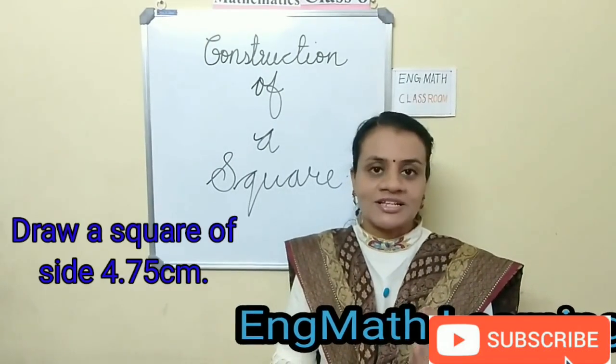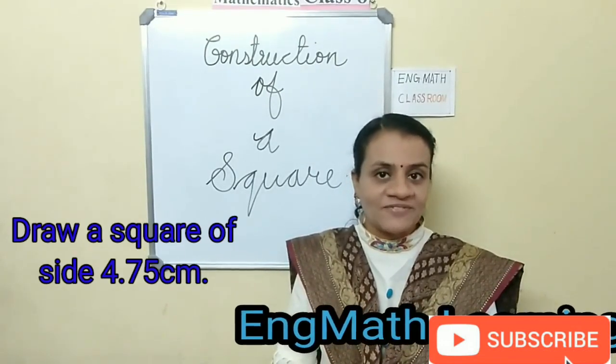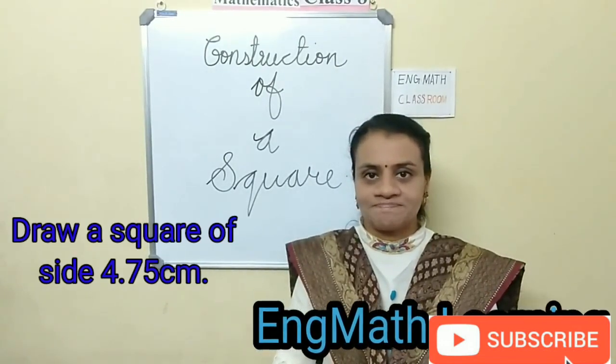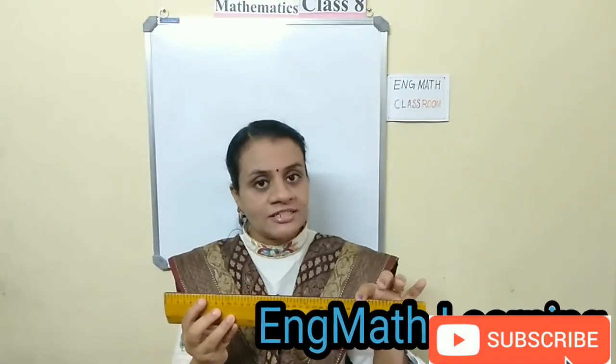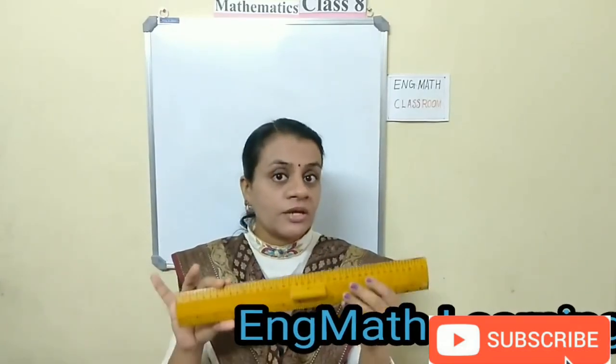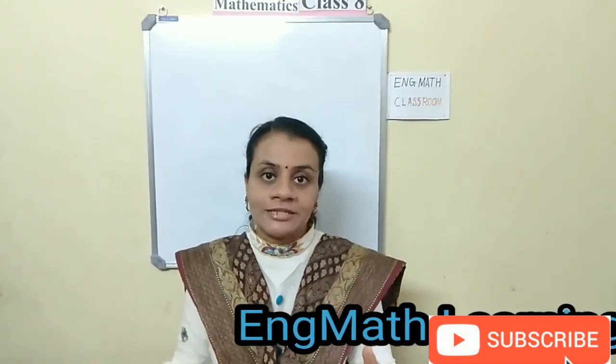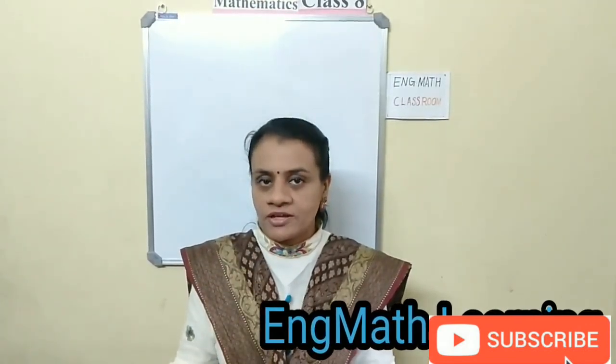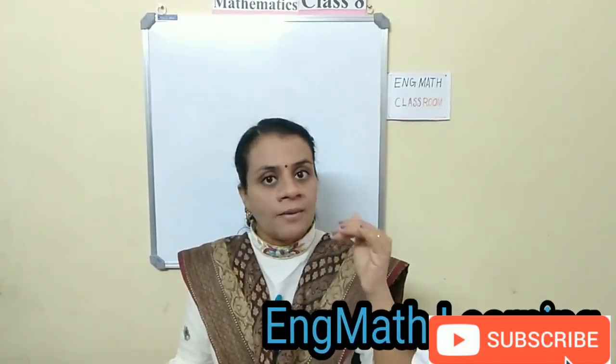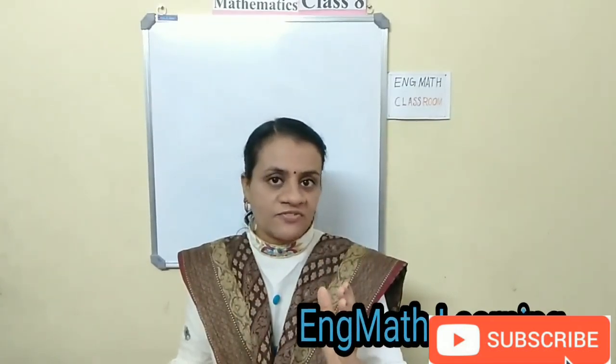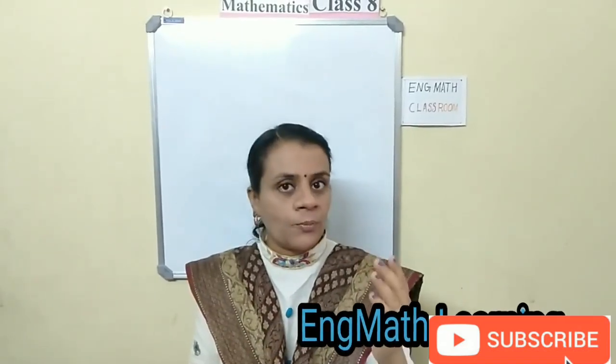Draw a square of each side 4.75 cm. Since 4.75 cm length is not easy to take from the ruler, we have to think of doubling the length of 4.75. Doubling the length means either you can multiply 4.75 by 2 or add 4.75 two times.